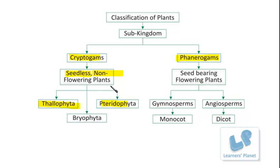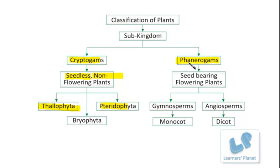In the earlier session, we have already discussed Thallophyta, Bryophyta, and Pteridophyta, which belong to Cryptogams. The next group is Phanerogams. Here, phaner means visible, so the reproductive parts are visible. They are able to produce seeds, and they are flowering plants. These plants are sub-classified into Gymnosperms and Angiosperms.